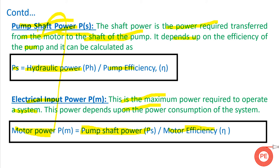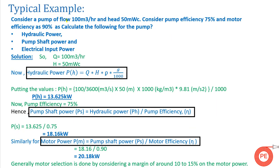Let's see with the help of an example how to calculate all these powers. Consider a pump with a flow of 100 m³/hr and a head of 50 meters water column. Pump efficiency is 75 percent and motor efficiency is 90 percent. Calculate hydraulic power, pump shaft power, and electrical input power. Using the formula P_H = Q × H × ρ × g / 1000, where Q = 100/3600 m³/s, H = 50 m, ρ = 1000 kg/m³, and g = 9.81 m/s², the hydraulic power comes to 13.65 kW.